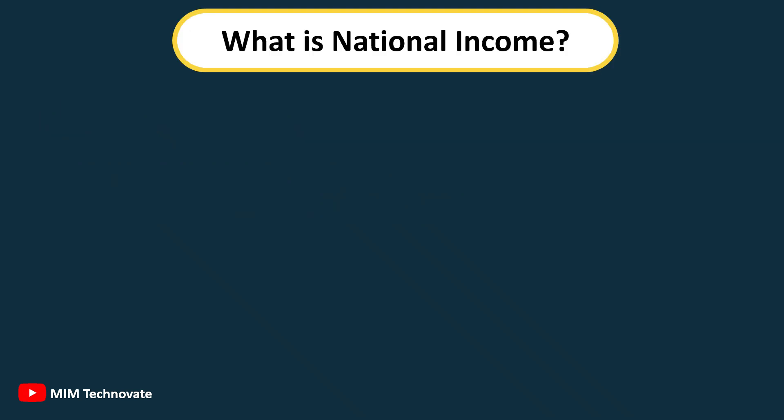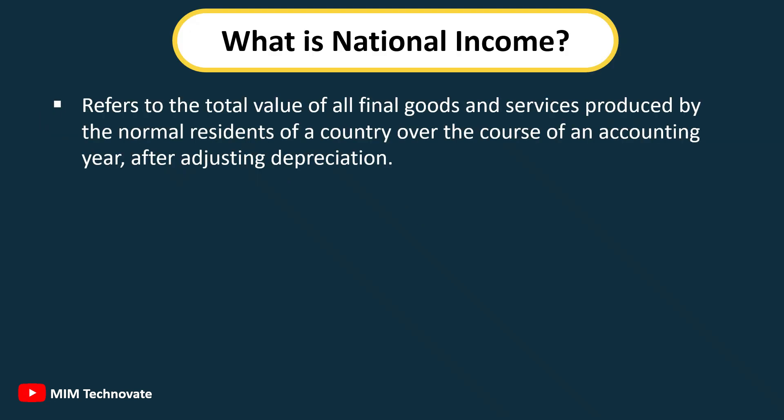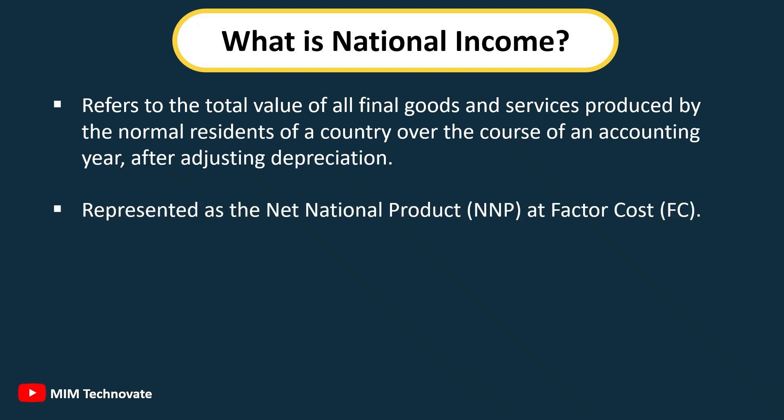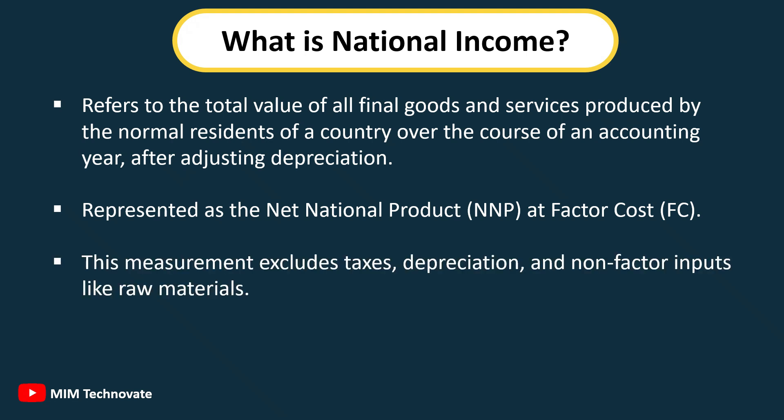National Income refers to the total value of all final goods and services produced by the normal residents of a country over the course of an accounting year, after adjusting depreciation. It is represented as the Net National Product, NNP, at Factor Cost, FC. This measurement excludes taxes, depreciation, and non-factor inputs like raw materials.